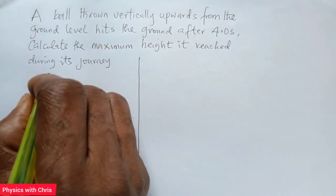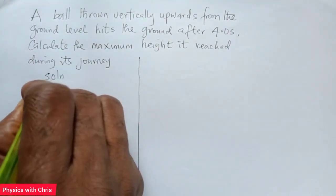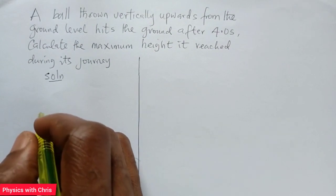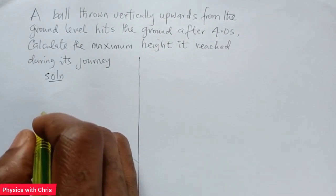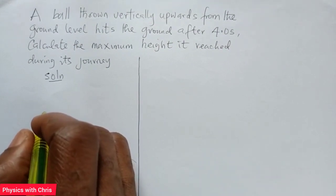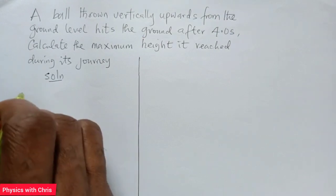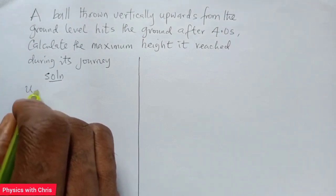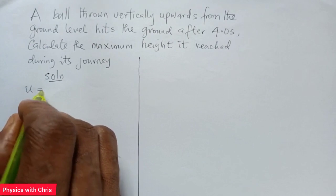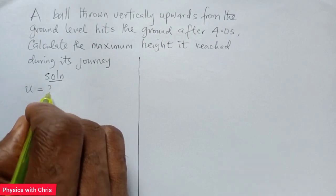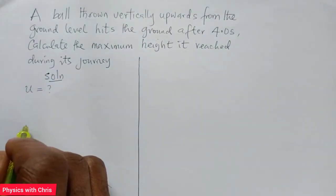We are going to solve this question. Now this ball is thrown vertically upwards from the ground, meaning that the initial velocity of the ball must be known because it is not given in the question.